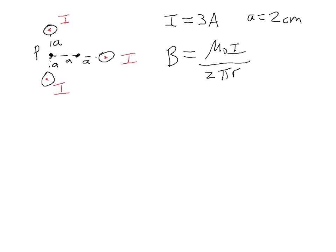We're going to find the magnetic field due to all three of these wires at point P. To do that, we need to find the magnetic field due to wire one, plus the magnetic field due to wire two, plus the magnetic field due to wire three. Because magnetic field is a vector, we must add those three magnetic fields as vectors to find the total magnetic field at point P.